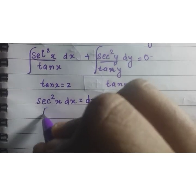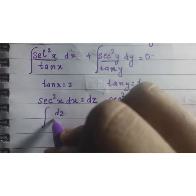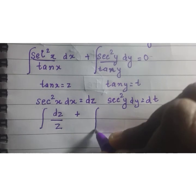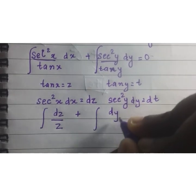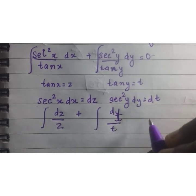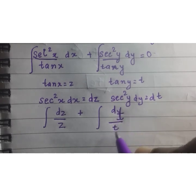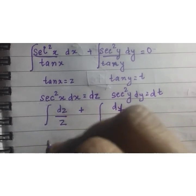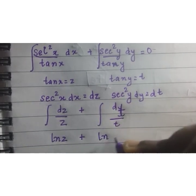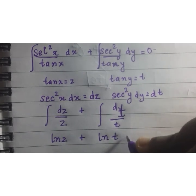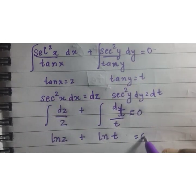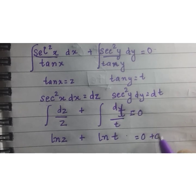So, let us write it here. dz upon z, now this tan(x) is z, plus dt upon t. This can be written as ln(z) plus ln(t) which is equal to 0, and let us put a constant of integration over here as c.